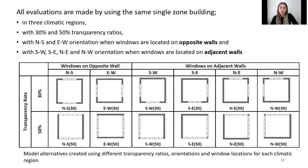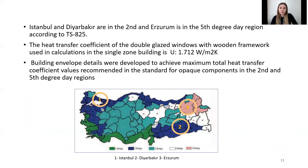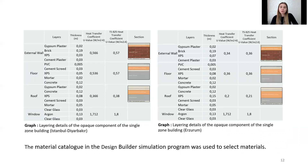This table shows that 12 different building forms were created for each climatic region. Istanbul and Diyarbakır are in the second degree day region, and Erzurum is in the fifth degree day region according to the standard. The same window properties are used for all options, meeting the limit values in the standard. The opaque parts of the building were created according to the standard for the second and fifth degree day regions. The selected cities are shown on the map: Istanbul, Diyarbakır, and Erzurum.